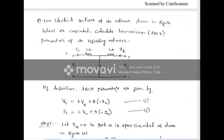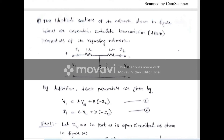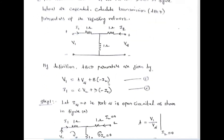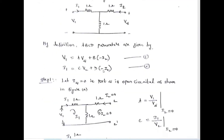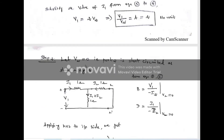Now let us see the first problem. Two identical sections of a network shown in figure are connected in cascade; calculate the transmission parameter of the resulting network. This is one two-port network, and two such identical networks are connected in cascade. We need to find the overall transmission parameter. First, we find the ABCD parameter for the single network: make I2 zero to calculate A and C, then make V2 zero to find B and D.